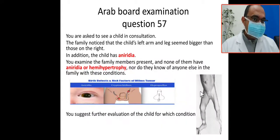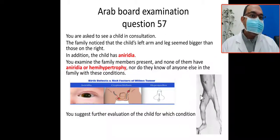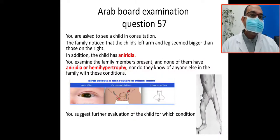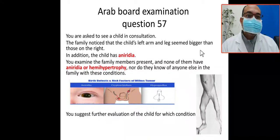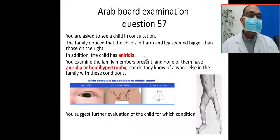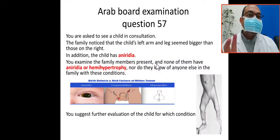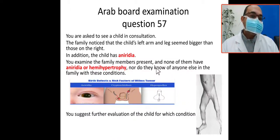In this illustration, you can see the right side is bigger than the left side — there is a discrepancy. There is hemihypertrophy between the lower limbs, left and right. In addition to that, you performed the red reflex, which was abnormal, and there is evidence of aniridia — no iris.